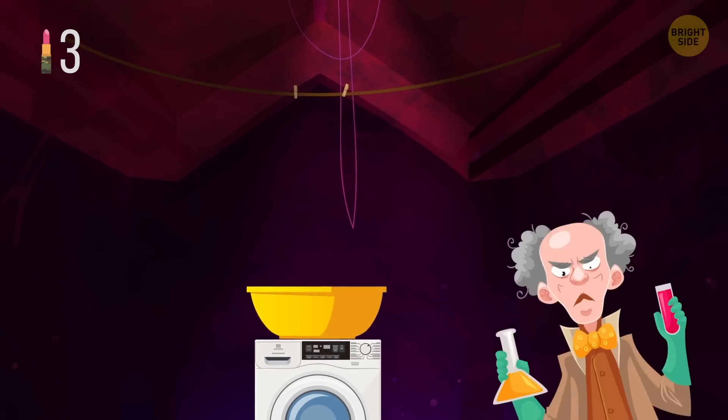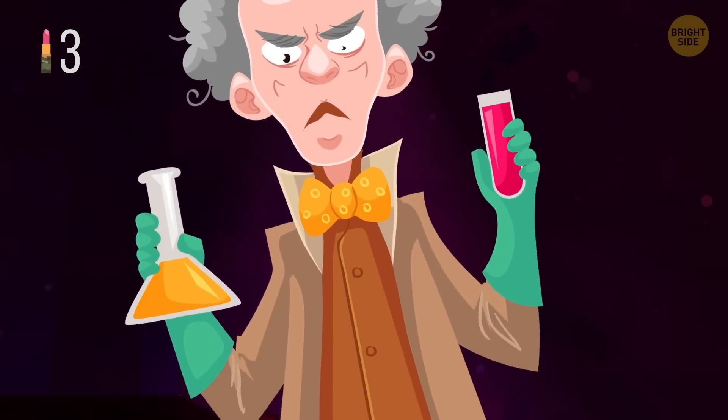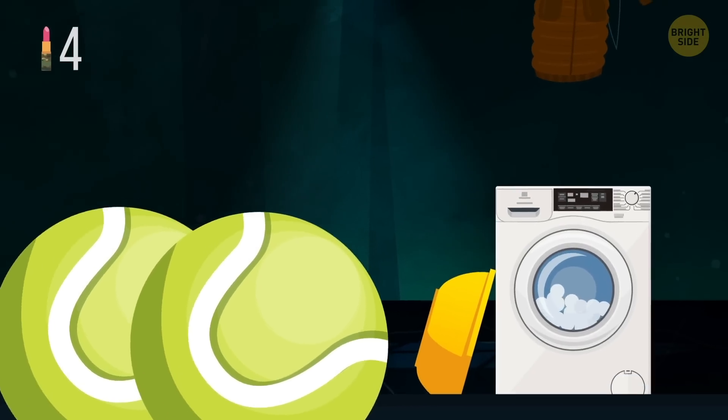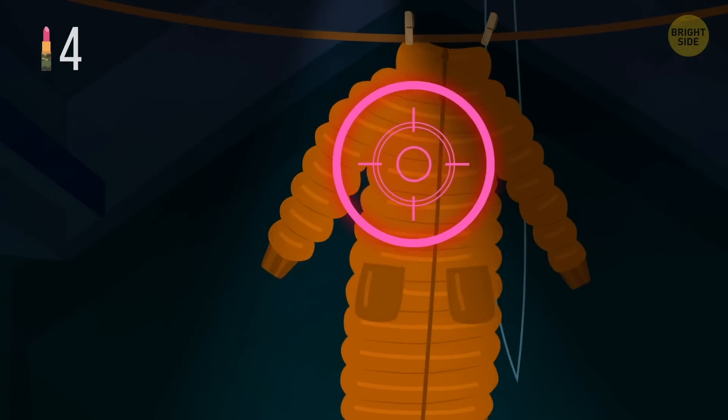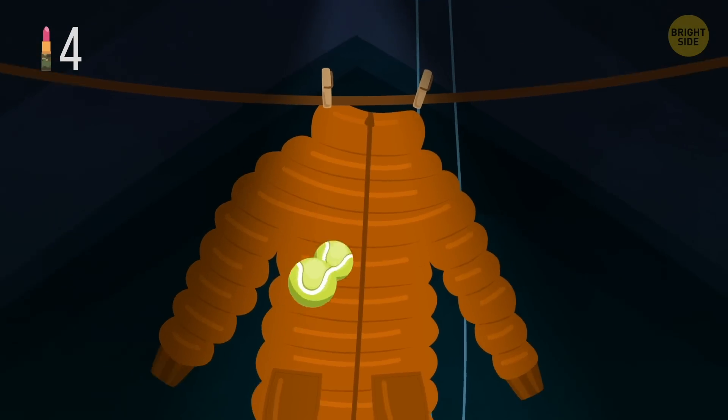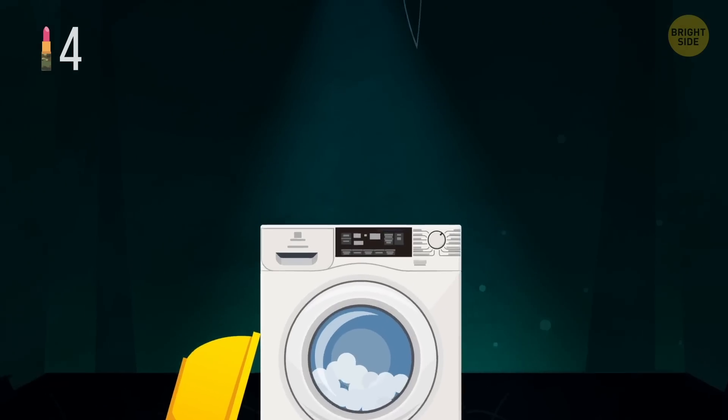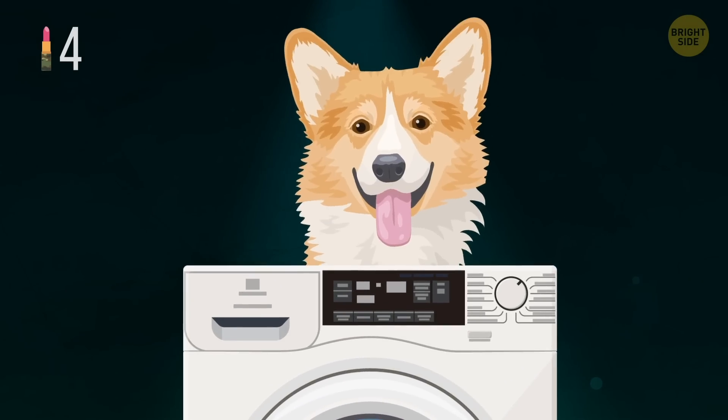Put a couple of tennis balls into the washing machine whenever you wash your down jackets. The balls will keep the down fluffed up, and they'll also remove all the foam.